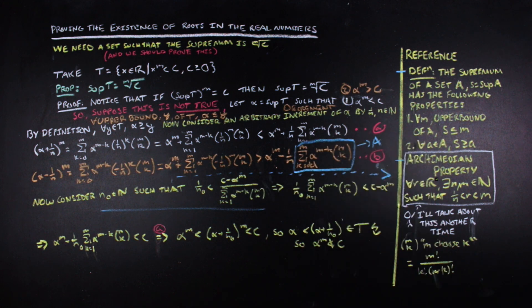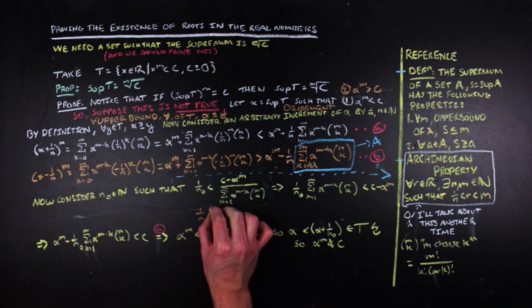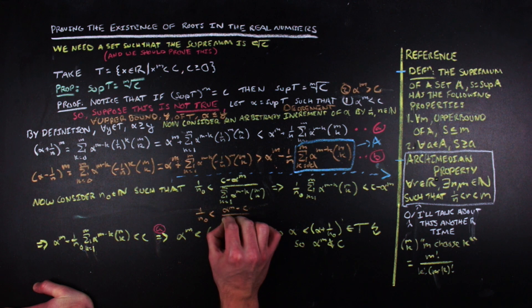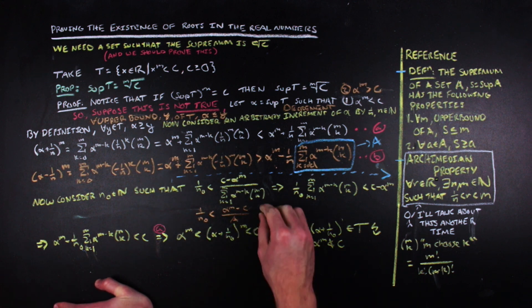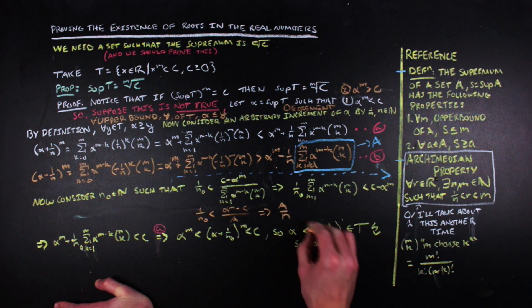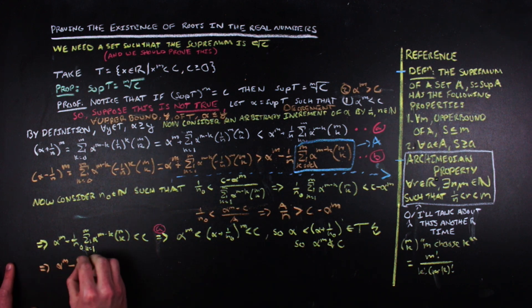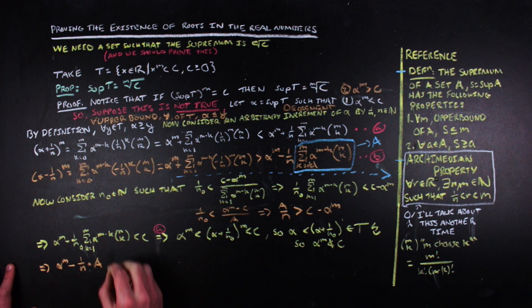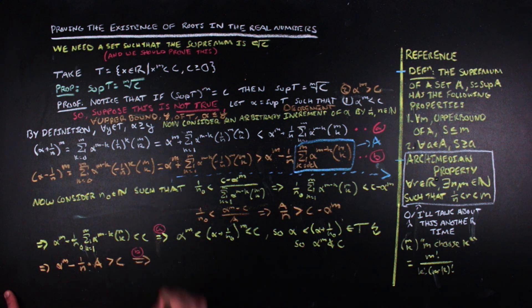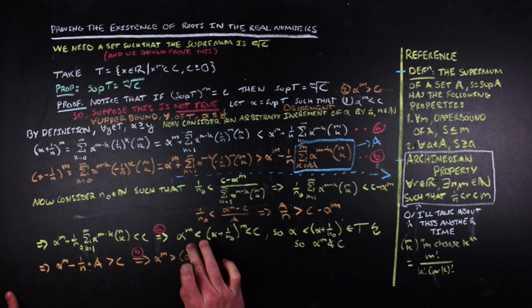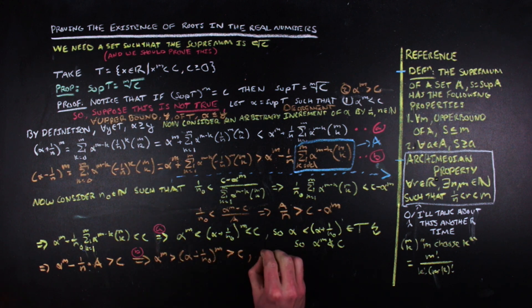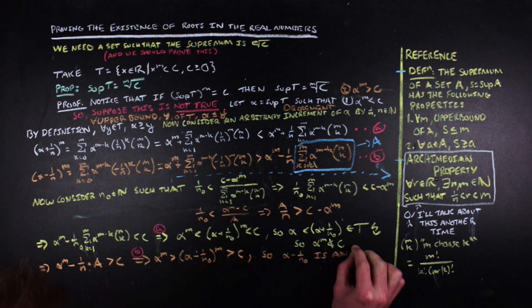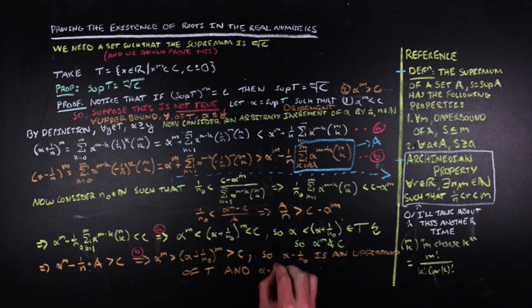We'll go ahead and give the same nod to the Archimedean property, but this time we take alpha to the mth power minus c instead of the other way around to make sure that the number on the right side is still a positive real number, because alpha to the mth power is greater than c in this case. We can then get the inequality into a similar position by multiplying both sides by negative 1 and rearranging as necessary. We again look to our 1 over n expression analysis to make the following inequality chain, and we can determine that alpha minus 1 over n sub 0 is less than alpha, but it is greater than c, making it an upper bound that is less than the least upper bound, which is again a contradiction.